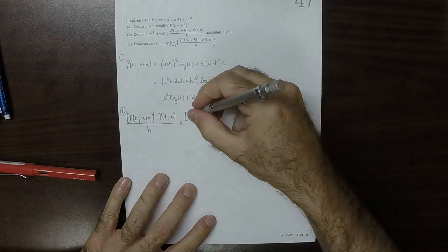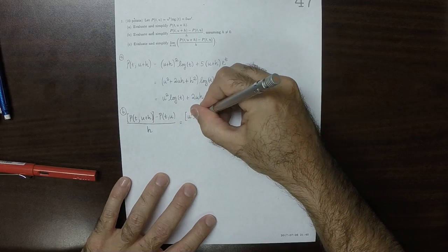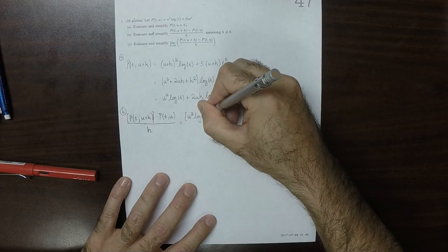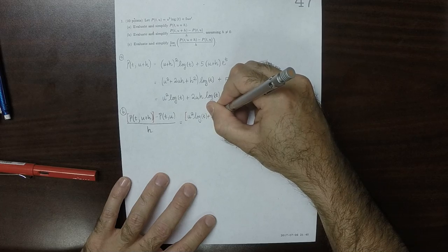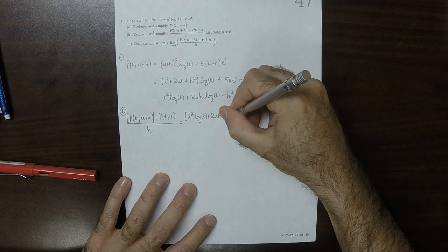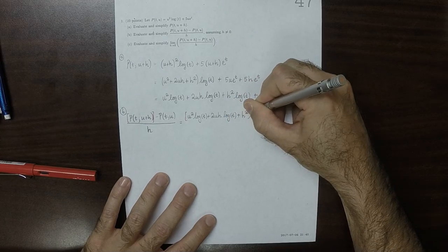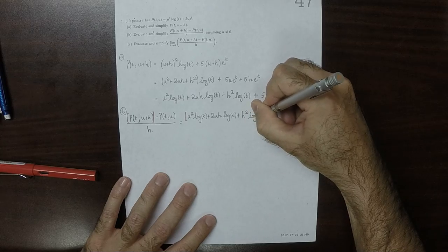So all of that, u squared log t plus 2uh log t plus h squared log t.